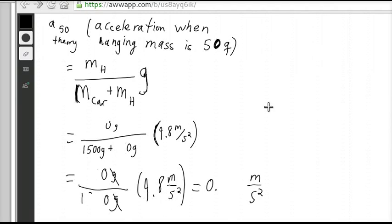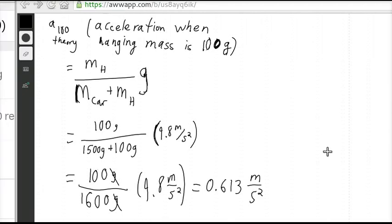Then for 100, the mass of the car has not changed, and you're hanging a 100 gram mass. You can see I'm modifying the same template, and you get 0.613 meters per second squared.